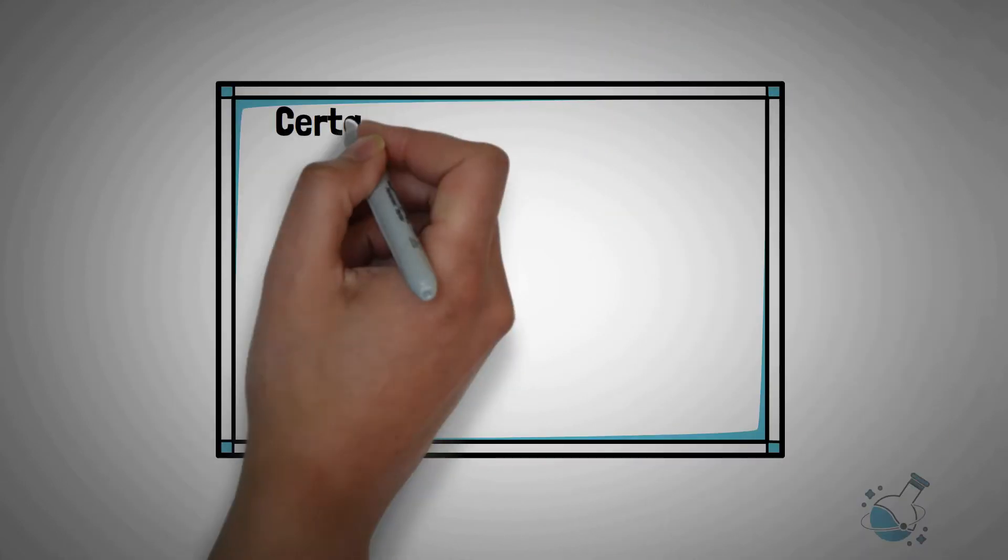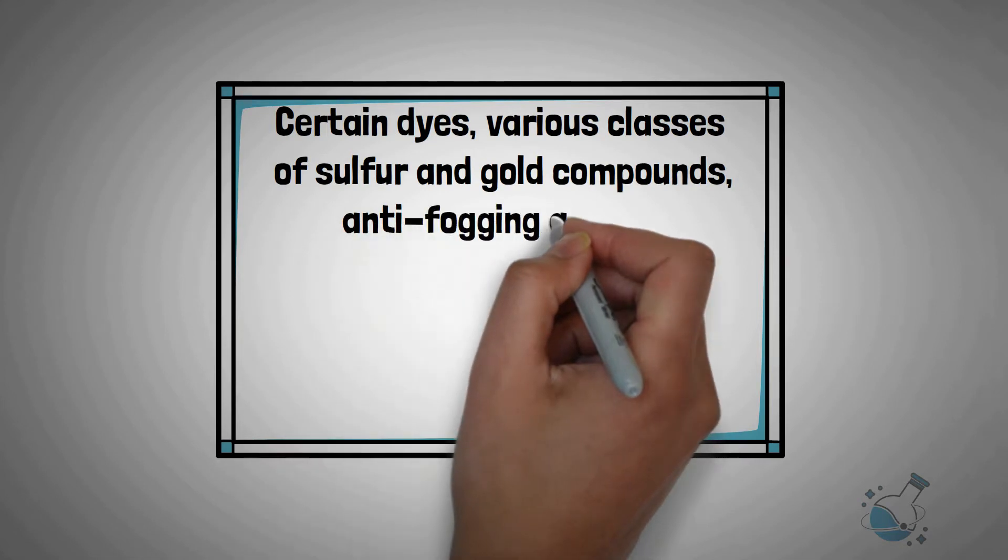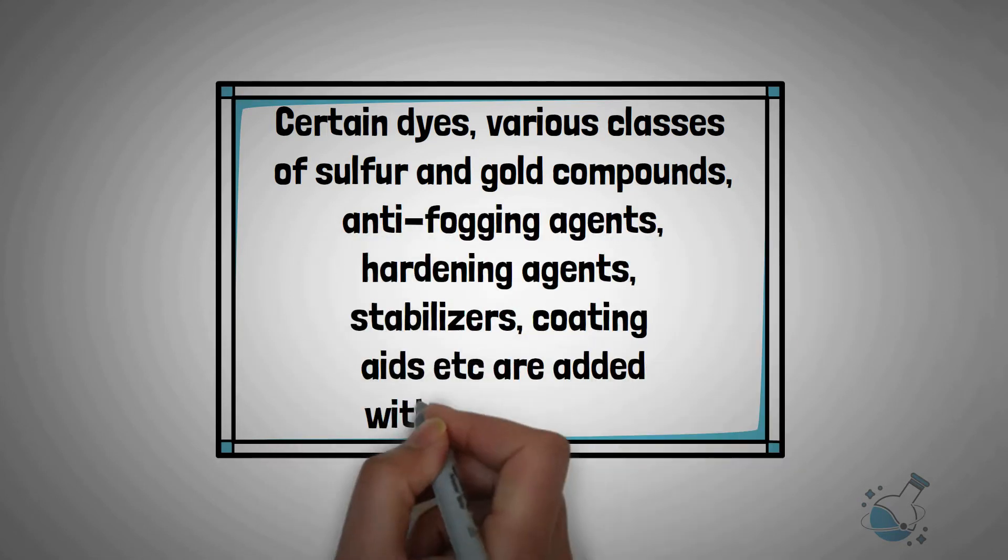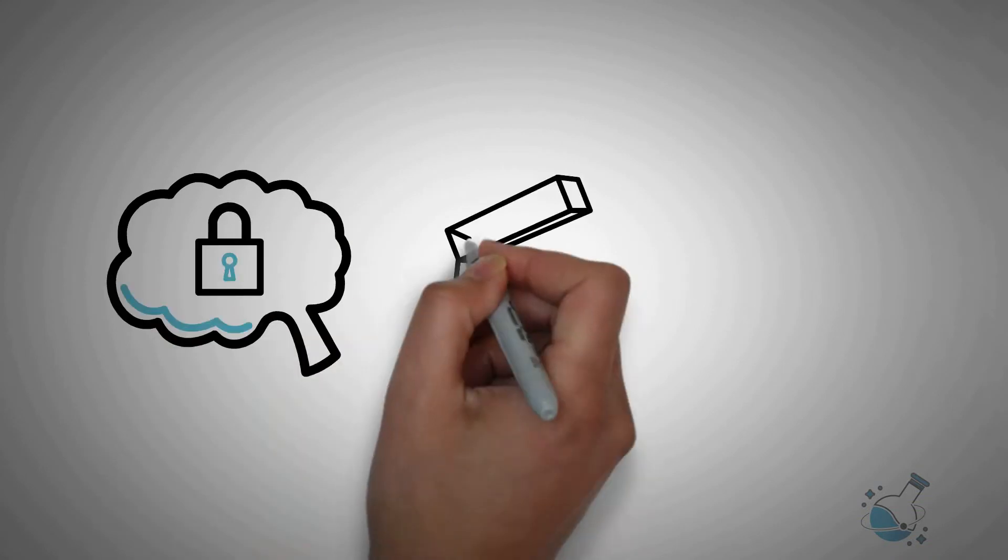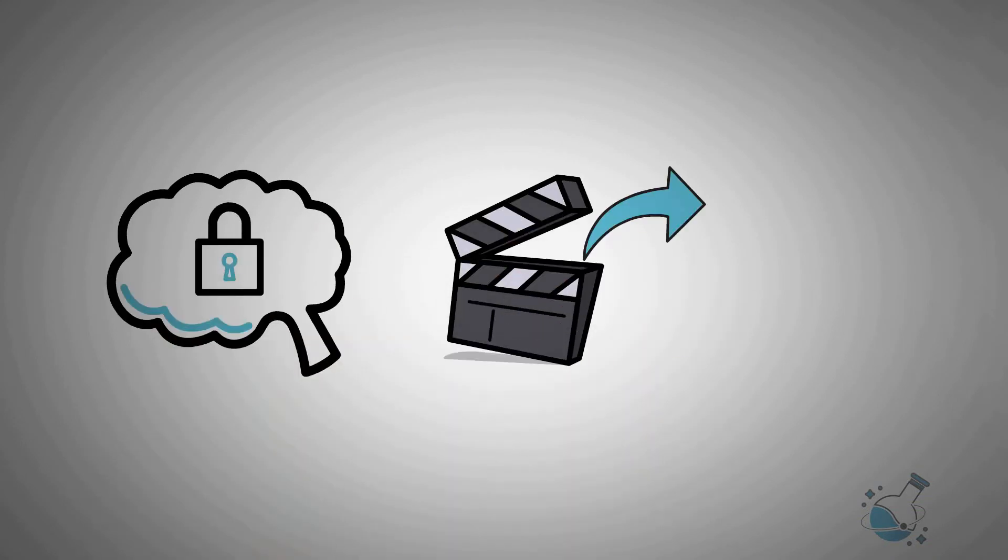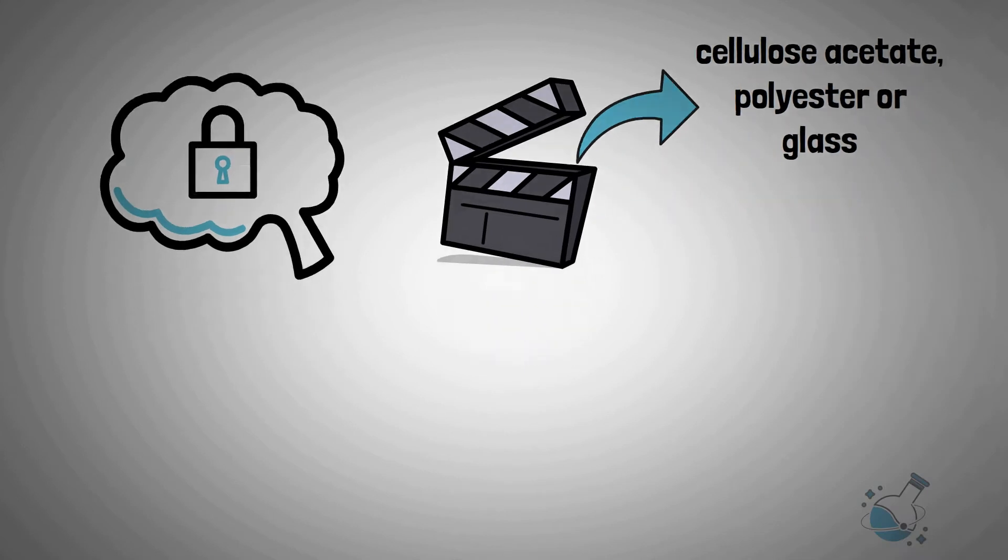Certain dyes, various classes of sulfur and gold compounds, anti-fogging agents, hardening agents, stabilizers, coating aids, etc. are added with the emulsion. After some additional treatments, this emulsion is coated on a film support of cellulose acetate, polyester, or glass.